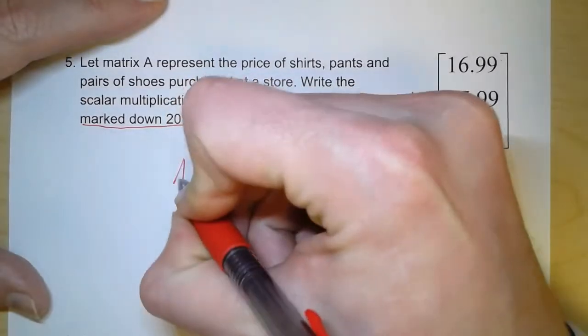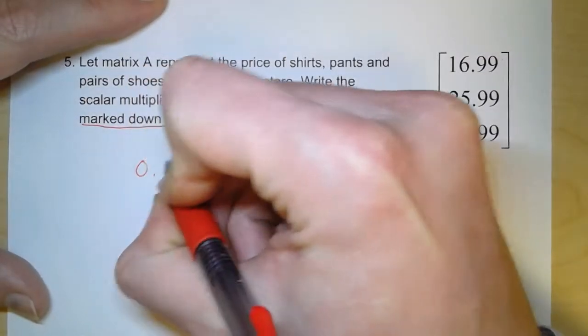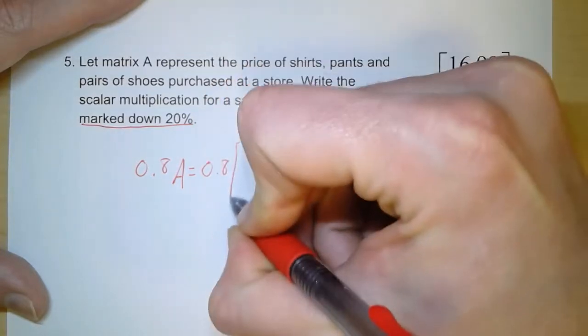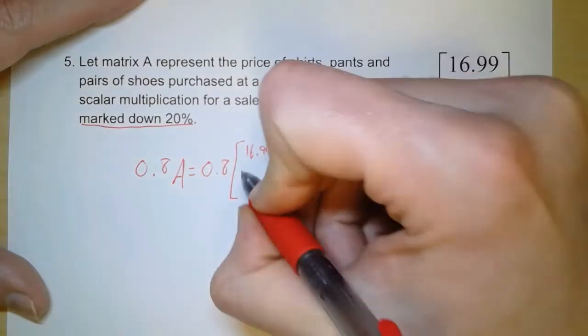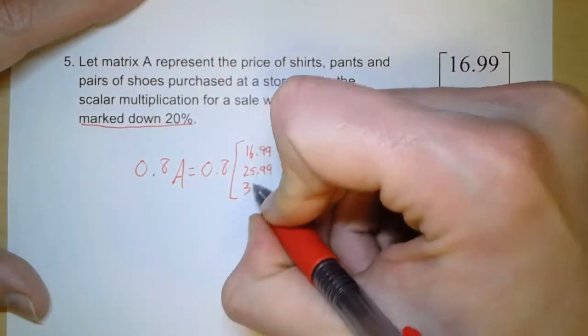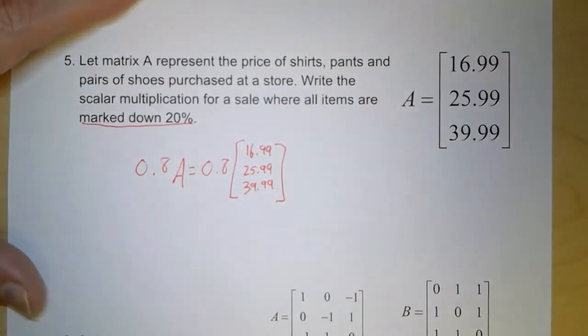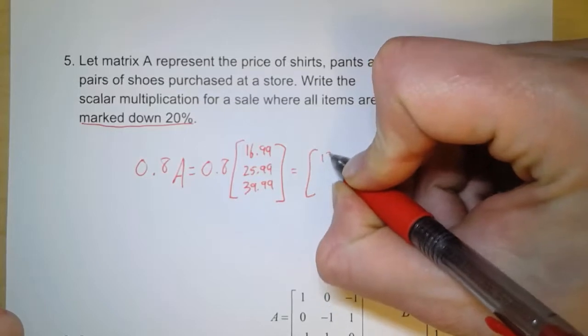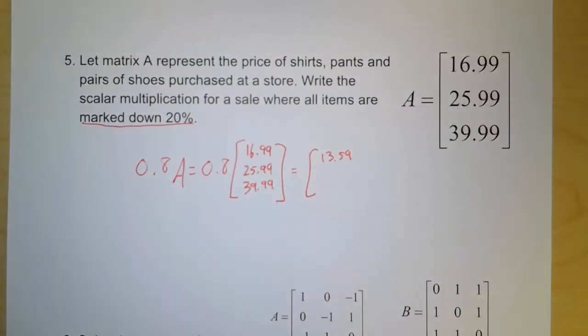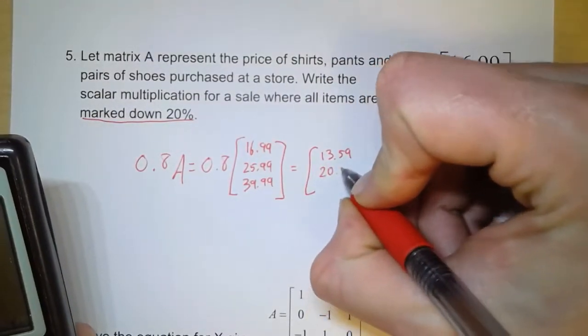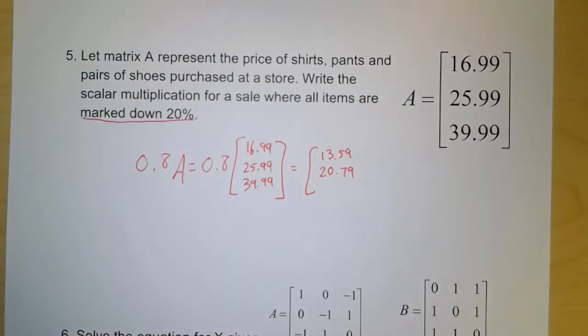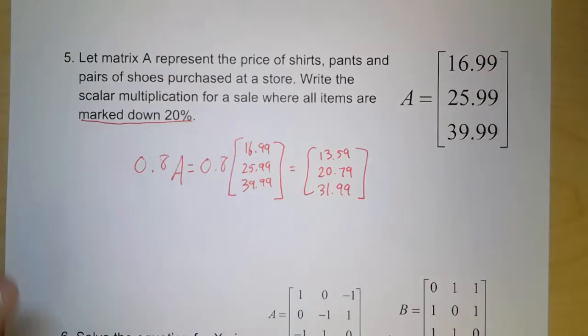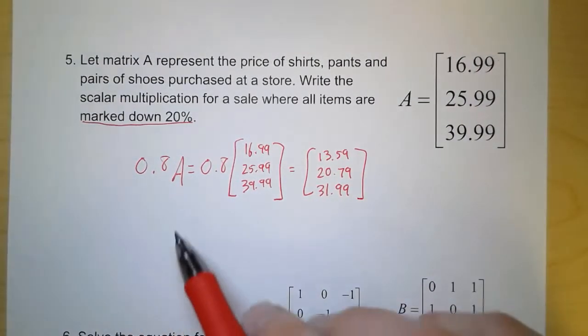And so what we're going to do is we're going to take matrix A and multiply it by 0.8. Because what that does is that retains 80% of its value. So 0.8 times 16.99, 25.99, and 39.99. And so now, if I multiply each of these by 0.8, I get 13.59 for the shirt. We get 20.79 for the pants. And for the shoes, we get 31.99. And all we did was we multiply this one matrix by 0.8. That was our scalar.